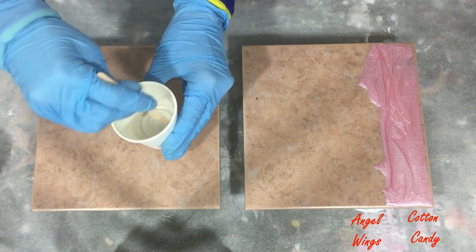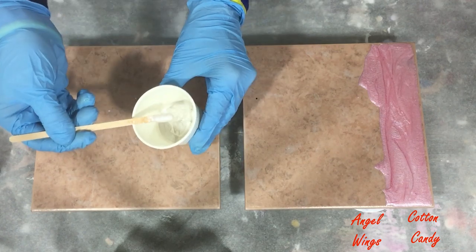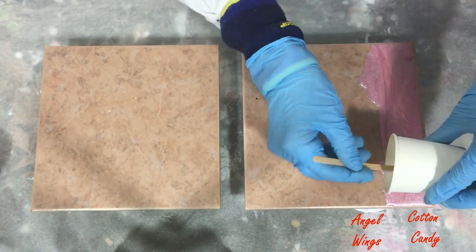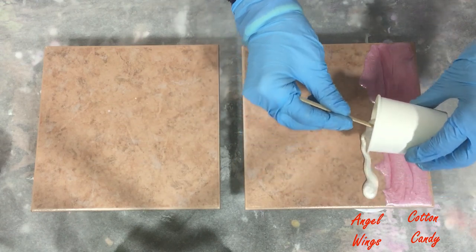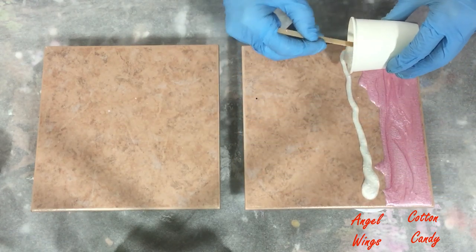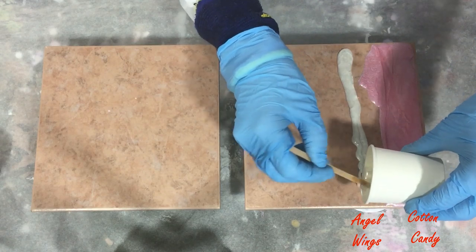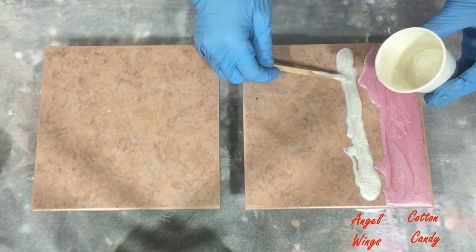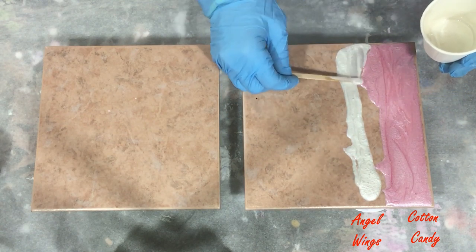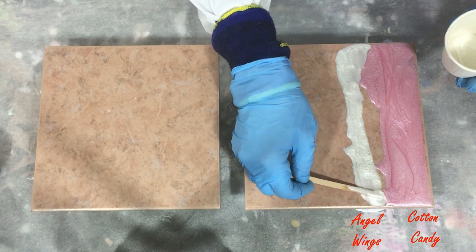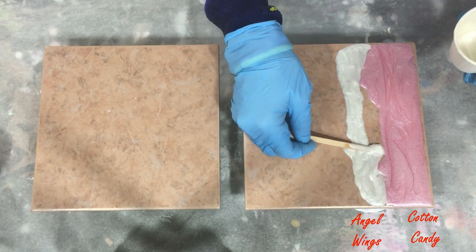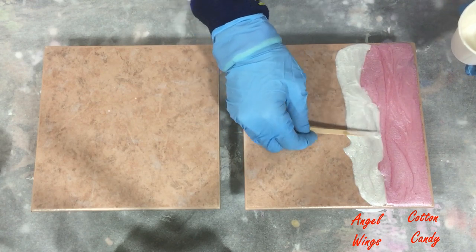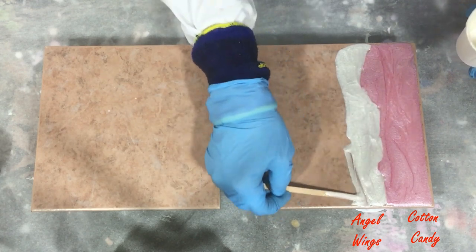The next color is a nice silvery white color called Angel Wings. It has a silver sheen over it. At the end of the video I'm also going to show you a close-up and then you will see it much better. What I'm doing now is making lines on my tiles so that you can see the colors next to each other. I'm also going to put some heat on it and some colors on top of each other.